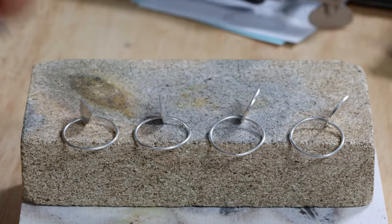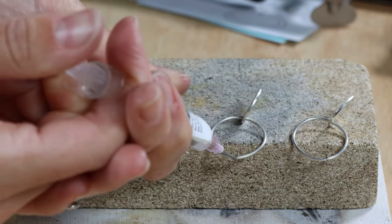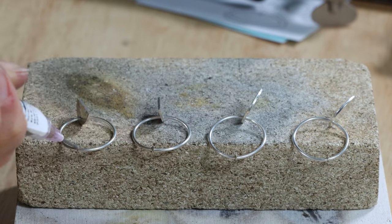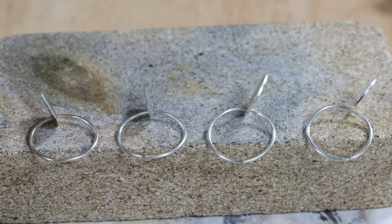Add a little solder paste on the join of the wire hoop and place on a heat proof block. Repeat this for all four hoops. Heat the wire using a hand blow torch until the solder melts and flows.